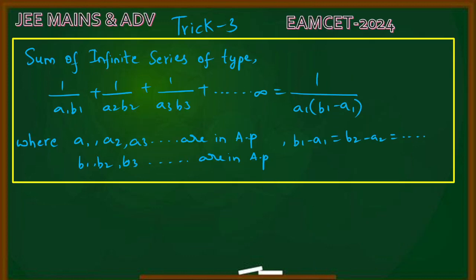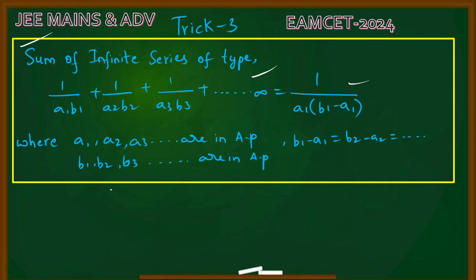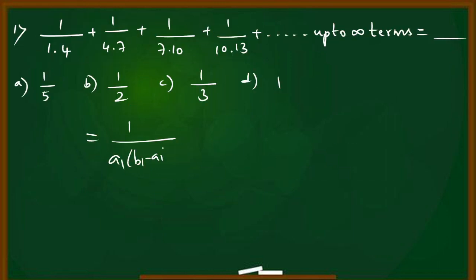Trick 3: Sum of infinite series in AP. This form appears in EAMCET and JEE exams. The form is 1/(A1×B1) + 1/(A2×B2) + 1/(A3×B3) and so on up to infinity. When it's in this form, the answer is 1/[A1×(B1-A1)]. Here A1, A2 are in AP and B1, B2 are in AP.